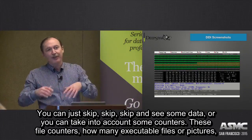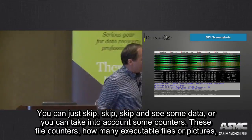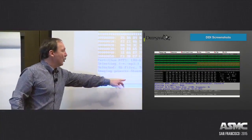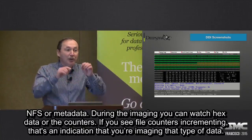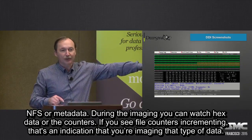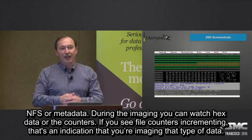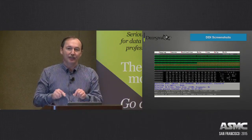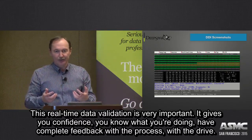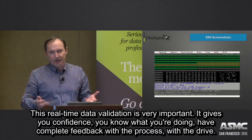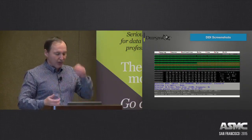You can just skip, skip, skip and then see there's data. You can also take into account some counters — file counters: how many executable files, pictures, or NTFS or HFS metadata are being imaged. So during imaging you can watch hex data and watch counters. If you see file counters incrementing, that's an indicator you are imaging that type of data. This real-time data validation is very, very important — it gives you confidence, so you know what you're doing. You have complete feedback with the process and the drive.